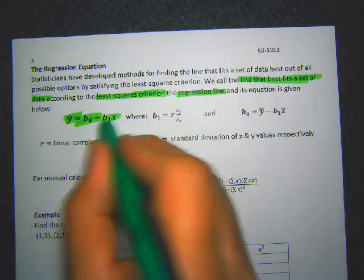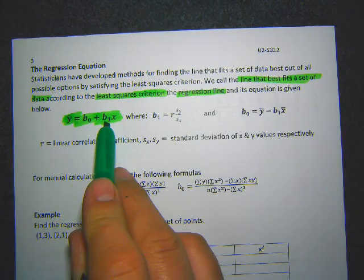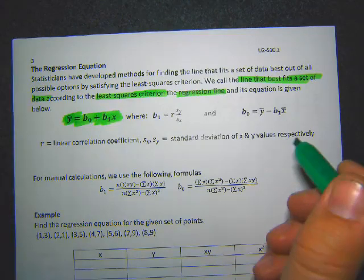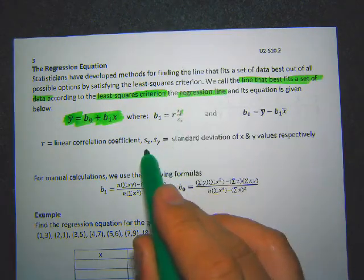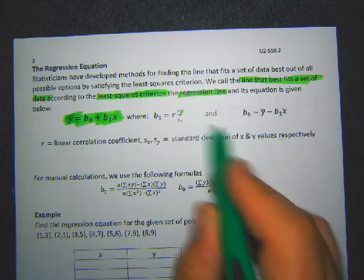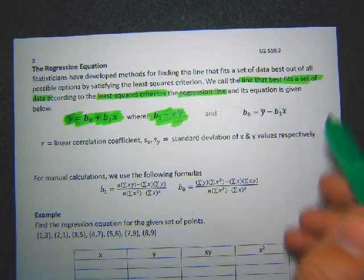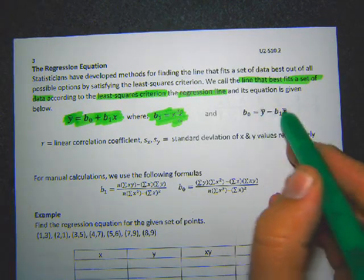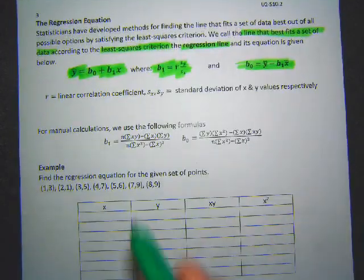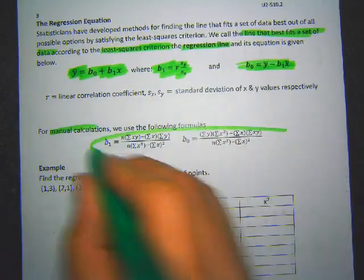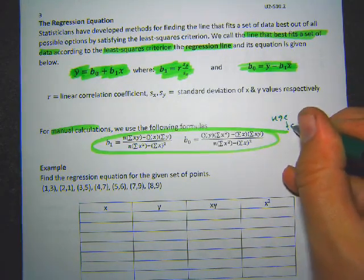The regression equation uses y-hat for the line of best fit: ŷ = b₀ + b₁x. b₁ is calculated as r × (Sy / Sx), where r is the linear correlation coefficient and Sy, Sx are standard deviations of the y and x variables. b₀ is found by plugging in the means of x and y along with b₁. There is a manual calculation formula, but we're never going to use it because it's very tedious.